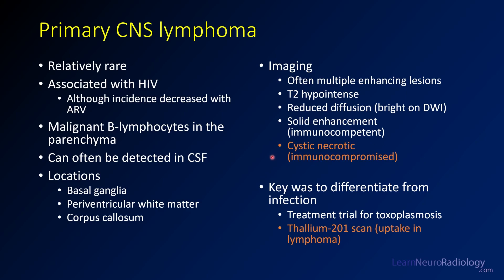In this case, the key is to try to differentiate it from infection. You can do a thallium scan — thallium is taken up by lymphoma but not toxoplasmosis and other infections. Often what they'll do is a treatment trial for toxoplasmosis: they'll give antitoxo medications, and if it gets better in a relatively short period of time, then it's probably toxoplasmosis. So those are the two ways you might differentiate these diseases.